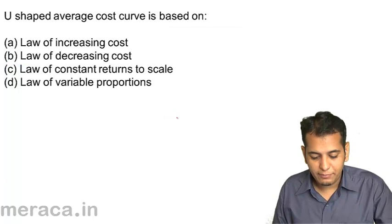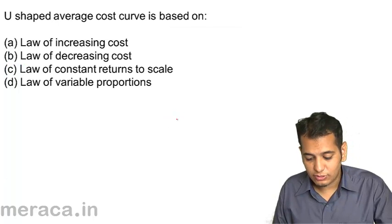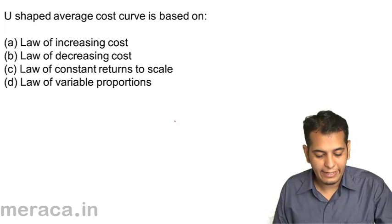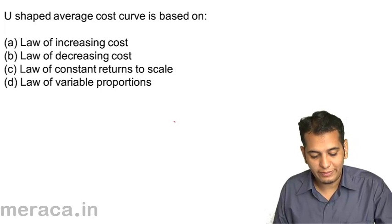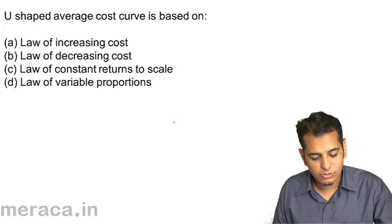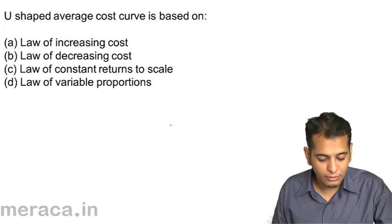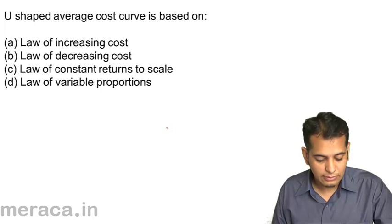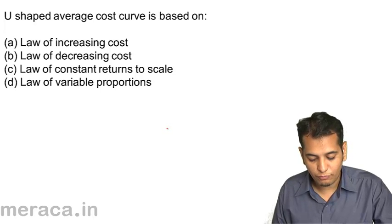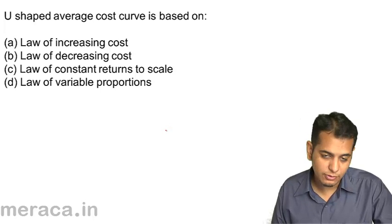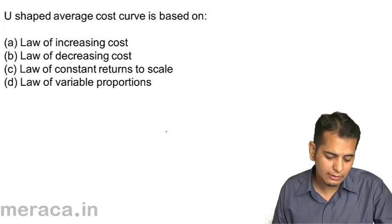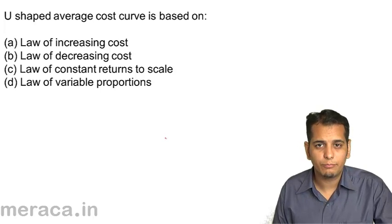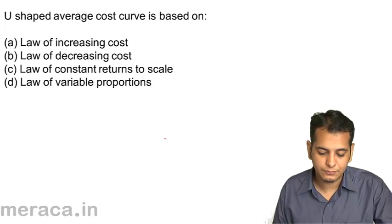U-shaped average cost curve is based on: A. Law of increasing cost. B. Law of decreasing cost. C. Law of constant returns to scale. D. Law of variable proportions.